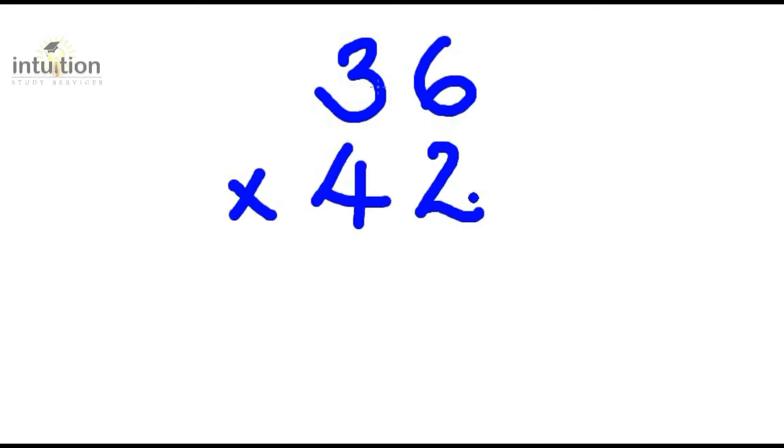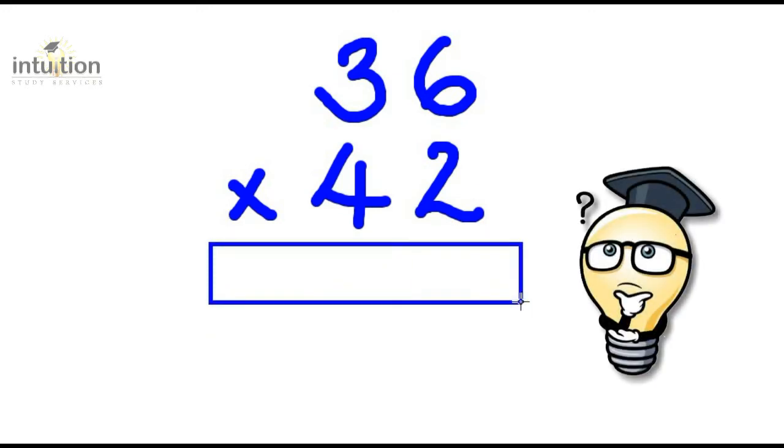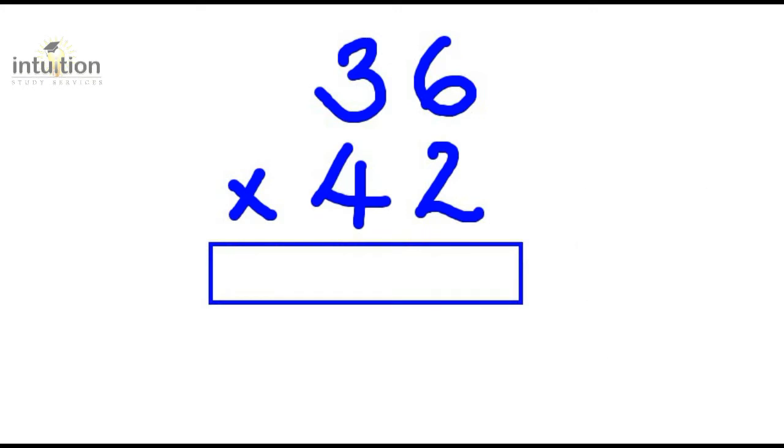Okay. So let's just do one more example so that we have fully understood the down, down, cross method. So let's consider this time 36 times 42. Give that one a go. Okay. Time's up. Did we get 1512? Don't worry if you didn't. Let's just use this method again to get the answer.